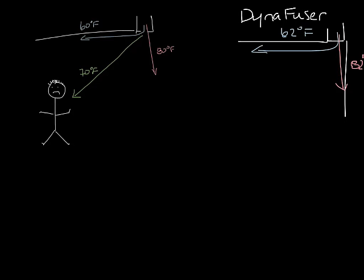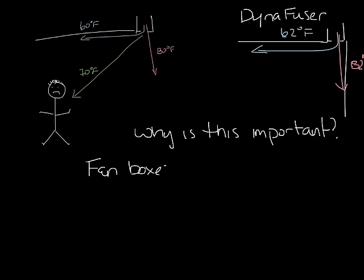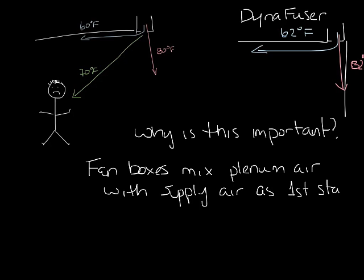So why is this two position actuation important? If you have your slot diffuser connected to a fan powered terminal unit, and if you recall from the fan box podcast the first stage of heating for a fan box is mixing plenum air with the primary air. So you could have supply air temperatures in the mid 70s quite often with a fan box. If the diffuser wasn't a two position device it could spend a lot of time in that middle range directing the air at a 45 degree angle into the space and towards the occupant.